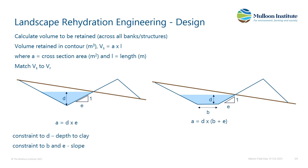You then look at whatever works you're doing — in this case, a contour bank — and you can work out the volume stored by that bank. If you add all those contour banks you're doing in the system, you want to try and match the volume stored to that event you've just worked out.